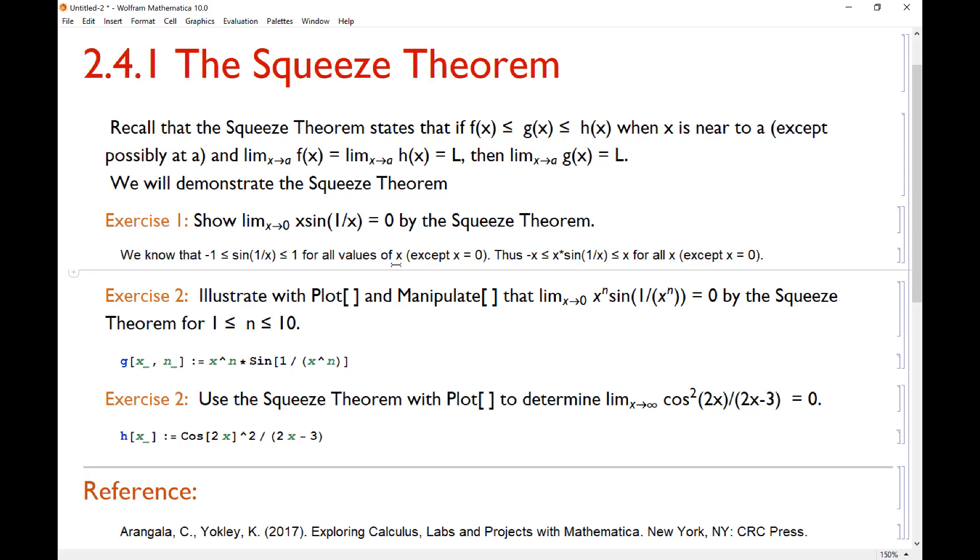So we know that sin(1/x) is trapped between negative 1 and 1 for all values of x except at 0, because what happens to sin(1/0)? It's not really defined. If we take these inequalities and we multiply everything by x, we get what we have here. That -x is less than or equal to x*sin(1/x), which is, by the way, the function that we're interested in. And that is trapped above by x everywhere except maybe at x equals 0. We're not really sure what's going on there.